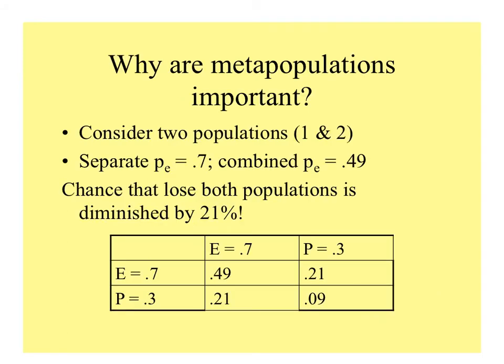Why are metapopulations important? If we consider two populations, each has its own separate probability of extinction or blinking out — let's say for each it's 0.7. If we combine them, we multiply those together, so it's 0.49. The chances that we lose both populations is diminished by 21%.